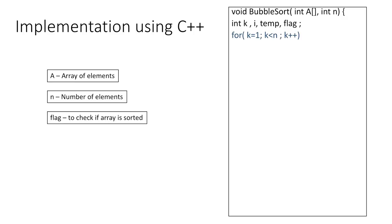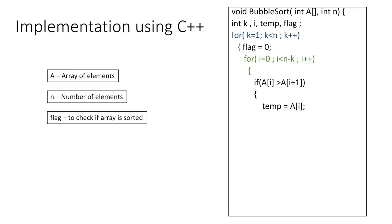We start our outer loop which runs from k equal to 1 to k less than n. At the beginning of each pass we set flag equal to 0, then start our inner loop running from i equal to 0 to i less than n minus k. Inside the loop, if the element on the left is greater than the element on the right, we perform the swap using the temp variable — storing a[i] in temp, a[i+1] in a[i], and temp in a[i+1]. If any swap occurs, we set flag to 1, indicating the array is not yet sorted.